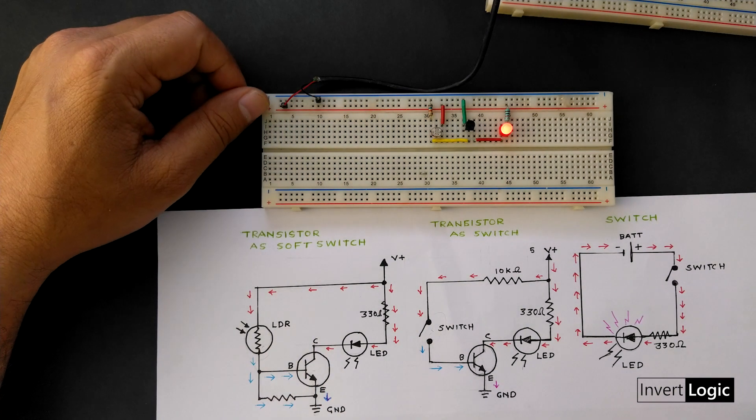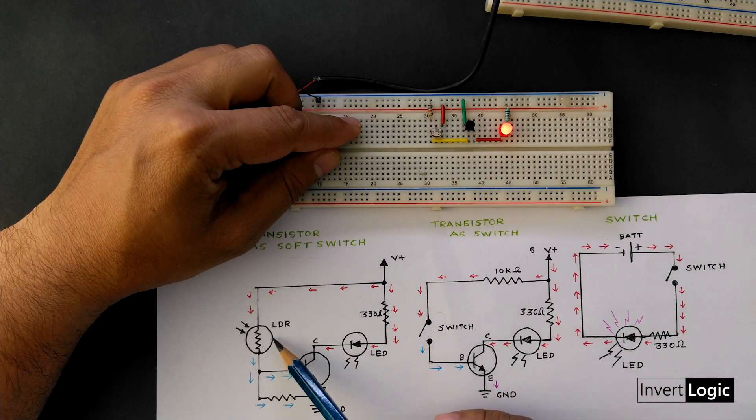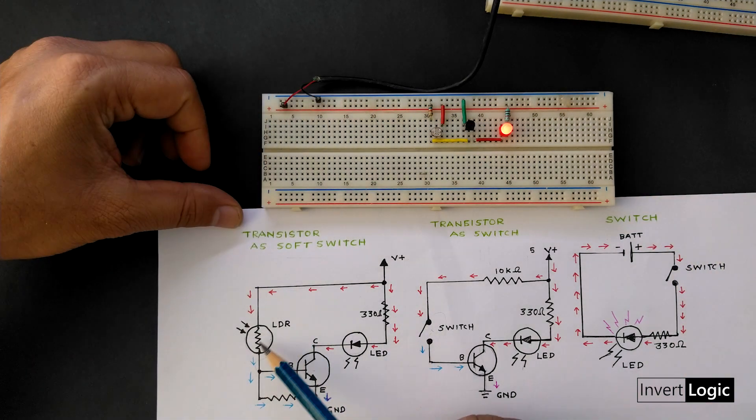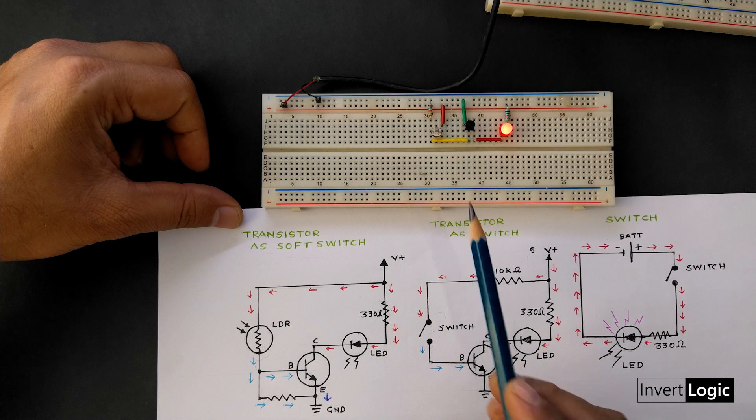So let's try. Right now there is enough light coming on this LDR sensor. So its resistance is very low and the current is flowing through it to turn on the sensor. So the LED is on.